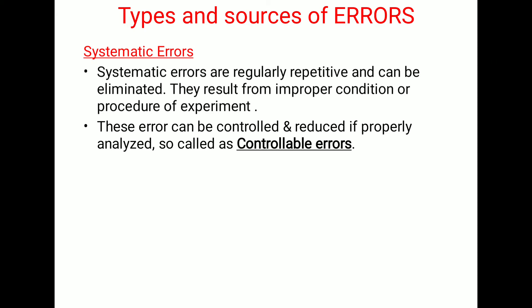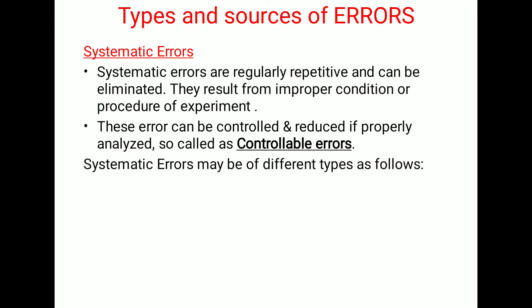Systematic errors are regularly repetitive and can be eliminated. They result from improper condition or procedure of experiment. These errors can be controlled and reduced if properly analyzed, so they are called as controllable errors. In simple words, the errors which can be controlled if proper care is taken are called as controllable errors. Systematic errors can be of different types as follows.